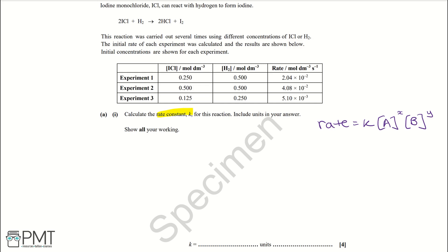Our reactants are ICl and H2. Our rate equation is going to be: rate equals K multiplied by [ICl] raised to some power, multiplied by [H2] raised to some power. To work out the order with respect to one reactant, you need the other one to remain constant. Here, H2 remains constant while ICl is increasing by a factor of two — it's doubling.